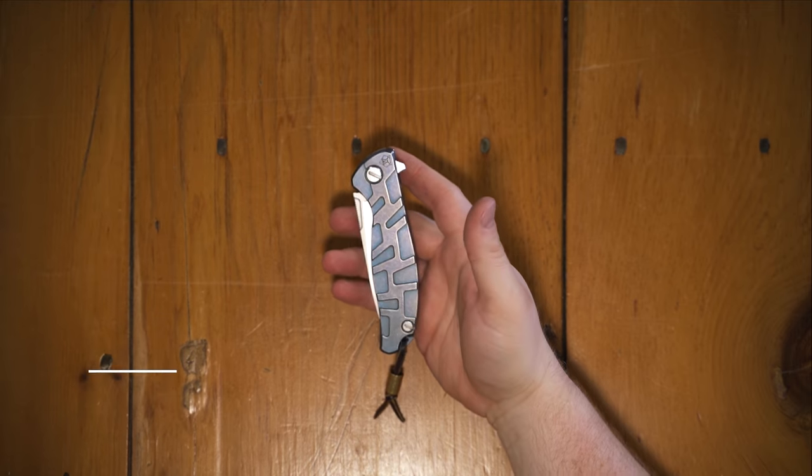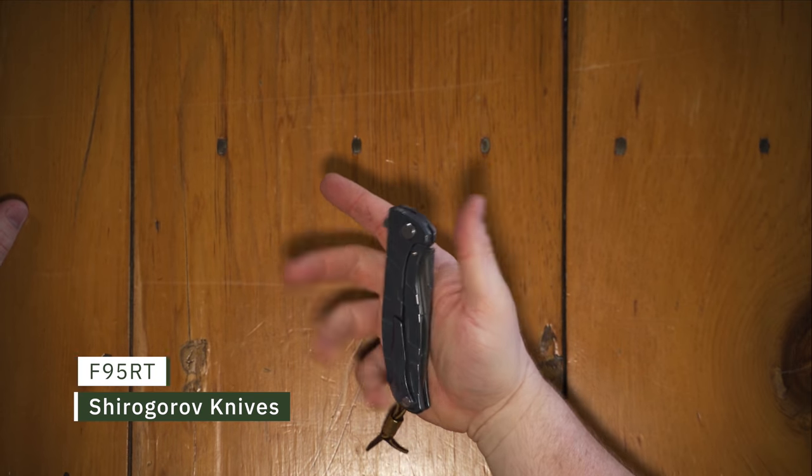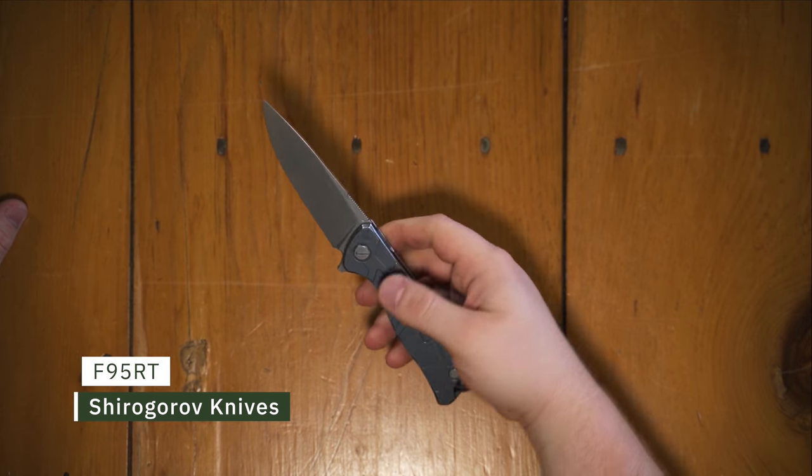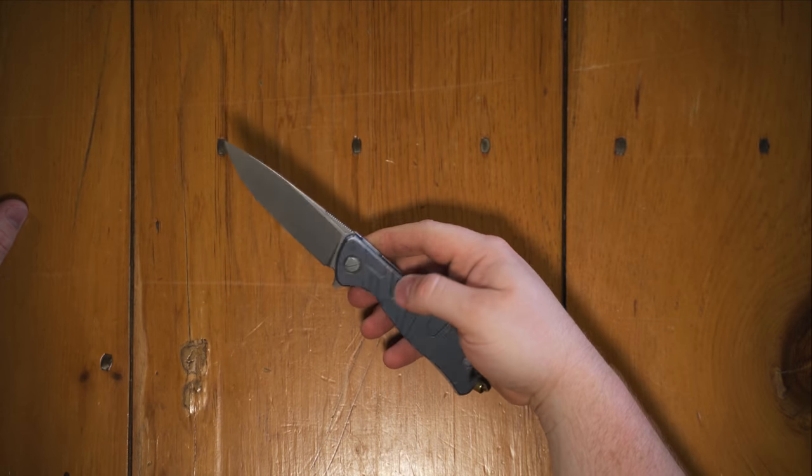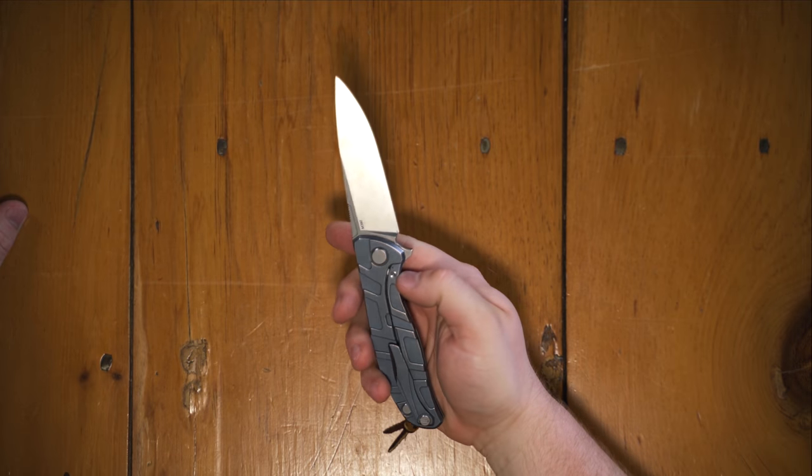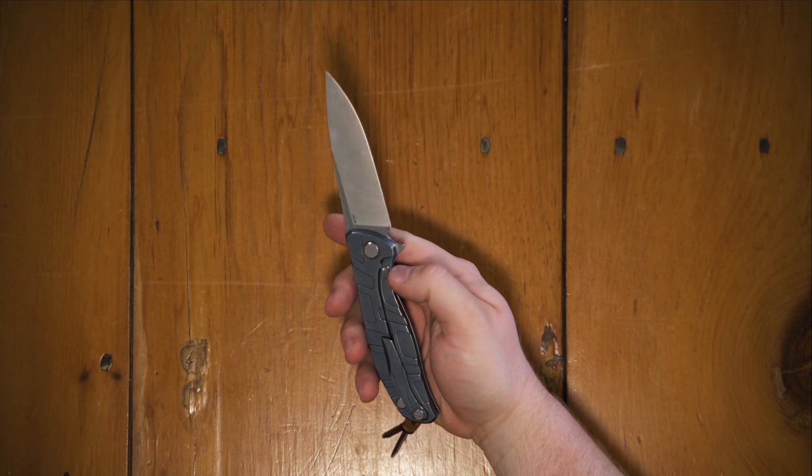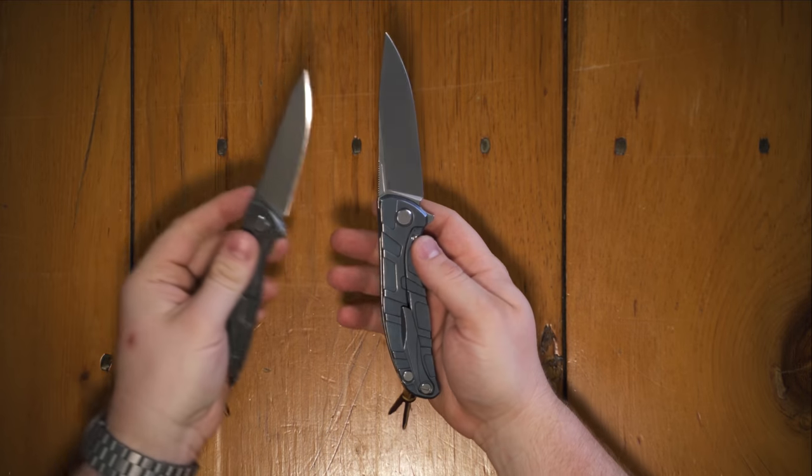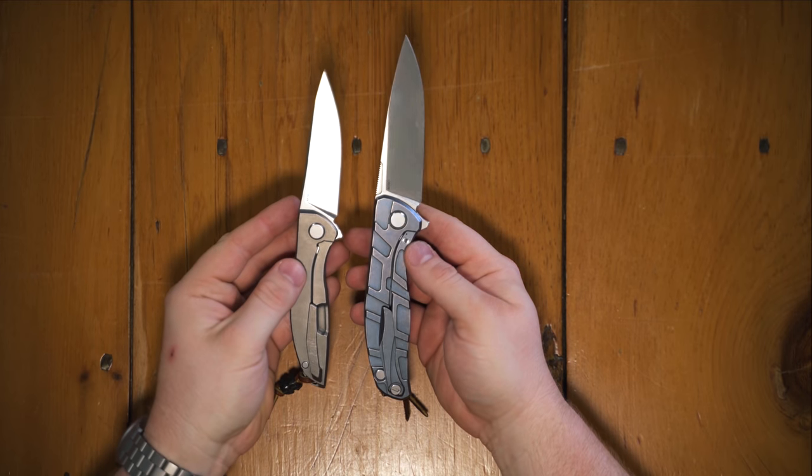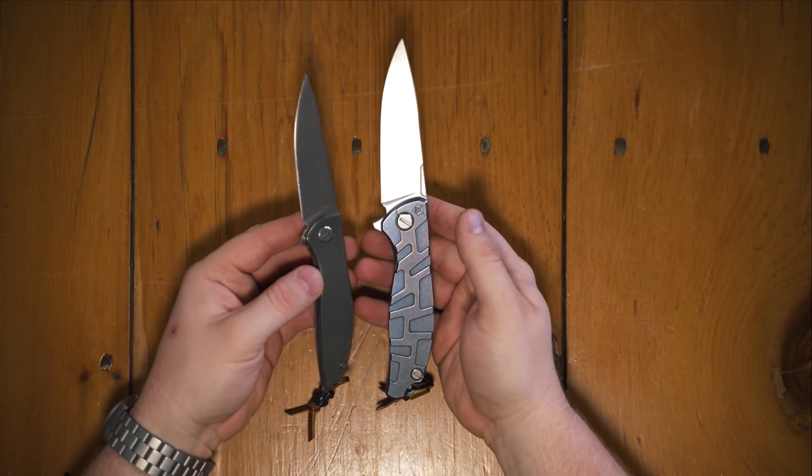Okay, back on that Shirogorov train. Next up, we have the Shirogorov F95RT. This one is a blue anodized version, much bigger than the Neon Zero, but very, very similar styling and shapes, slightly different profiles, but very similar knives.